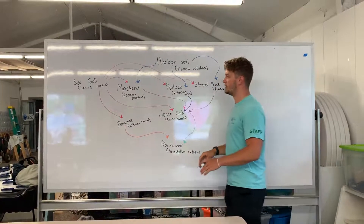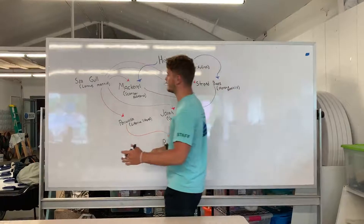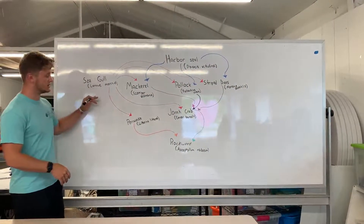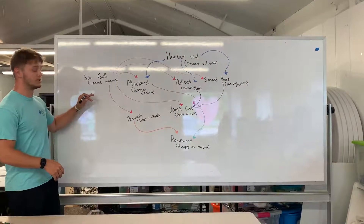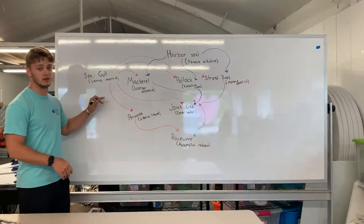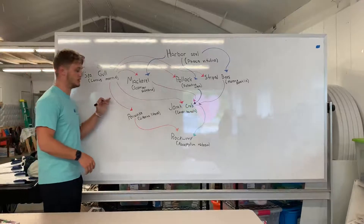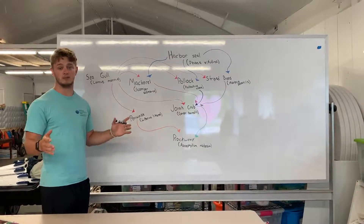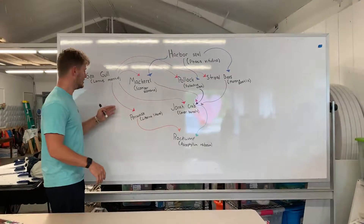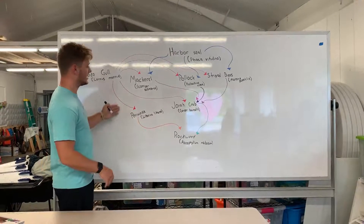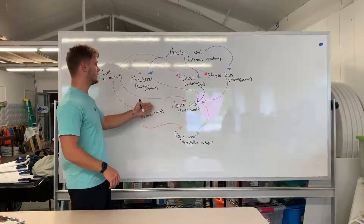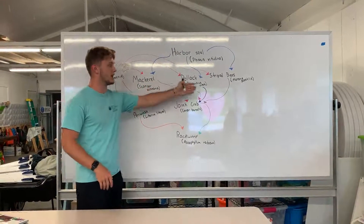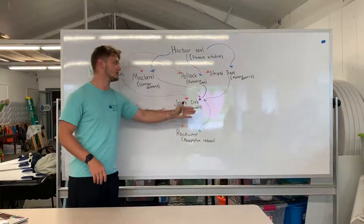We've got another animal over here, the seagull. The seagull actually eats even more than the harbor seal in terms of different amounts of species. It will eat the periwinkle, the jonah crab, and will also eat the mackerel, pollock, and the striped bass.